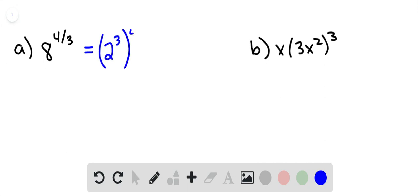So we have 2 cubed to the 4 thirds power. Now remember your exponent rule, the power rule that says if you have a power to a power, you're going to multiply them. So 3 times 4 thirds is 4. So now all we have is 2 to the 4th, and that's 16.